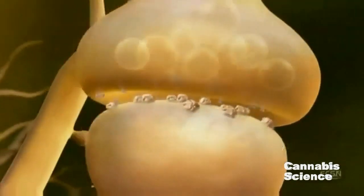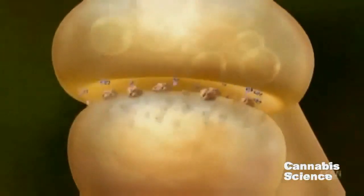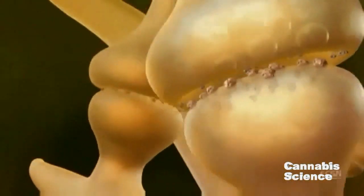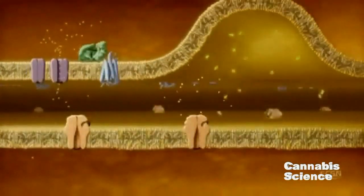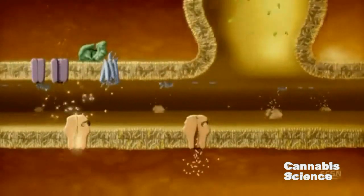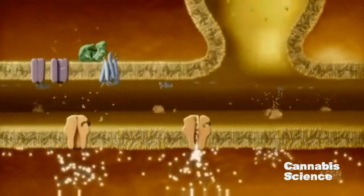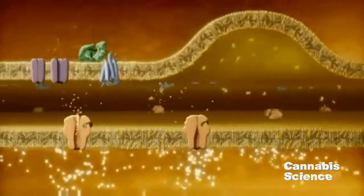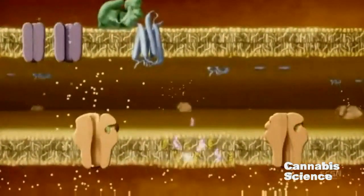Let's take a closer look at this mechanism using a glutamatergic neuron model. When an action potential reaches the axon terminal, membrane depolarization triggers the release of glutamate. Glutamate binds to post-synaptic glutamate receptors, inducing calcium channels to open. During periods of intense neural activity, calcium accumulates in the post-synaptic neuron.